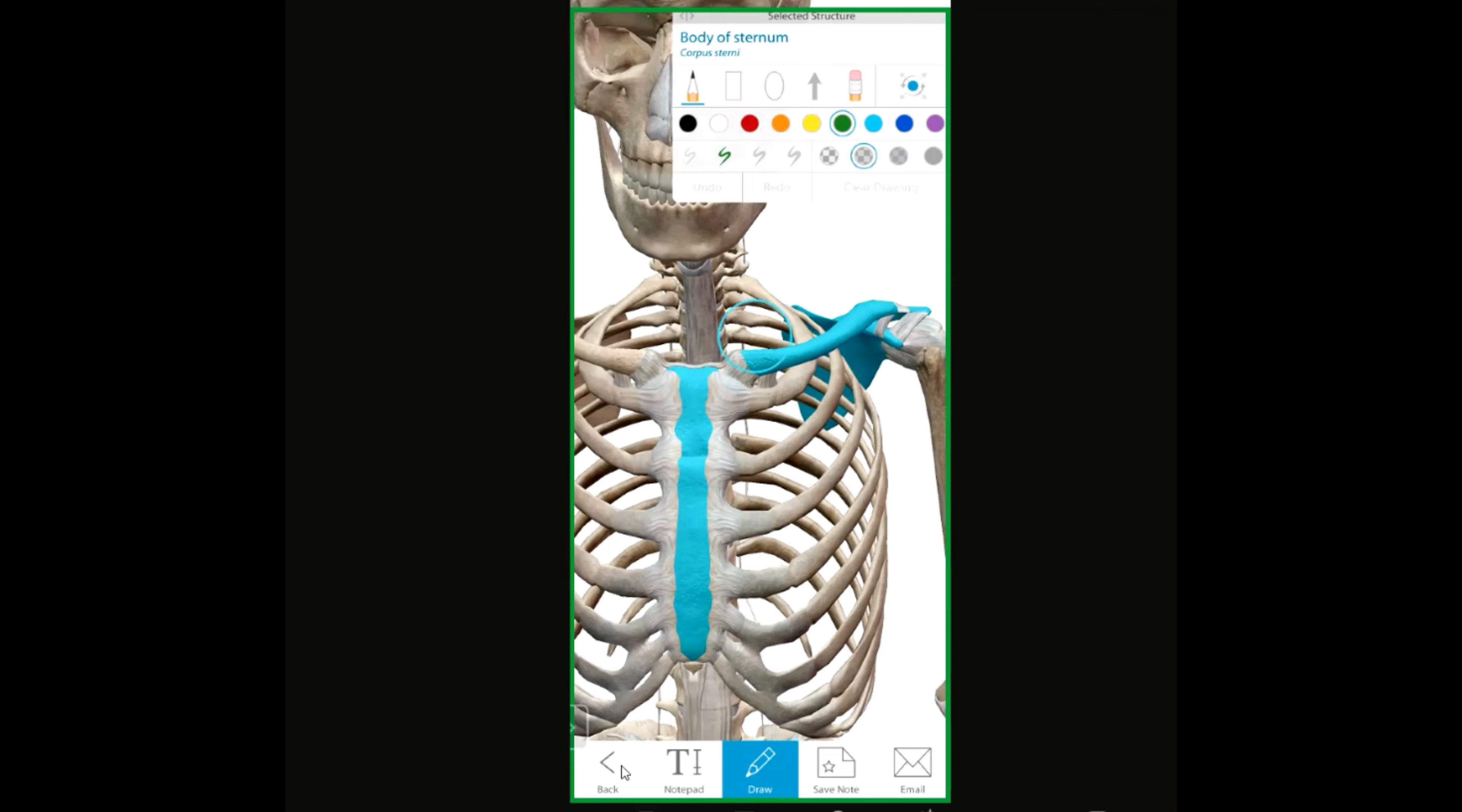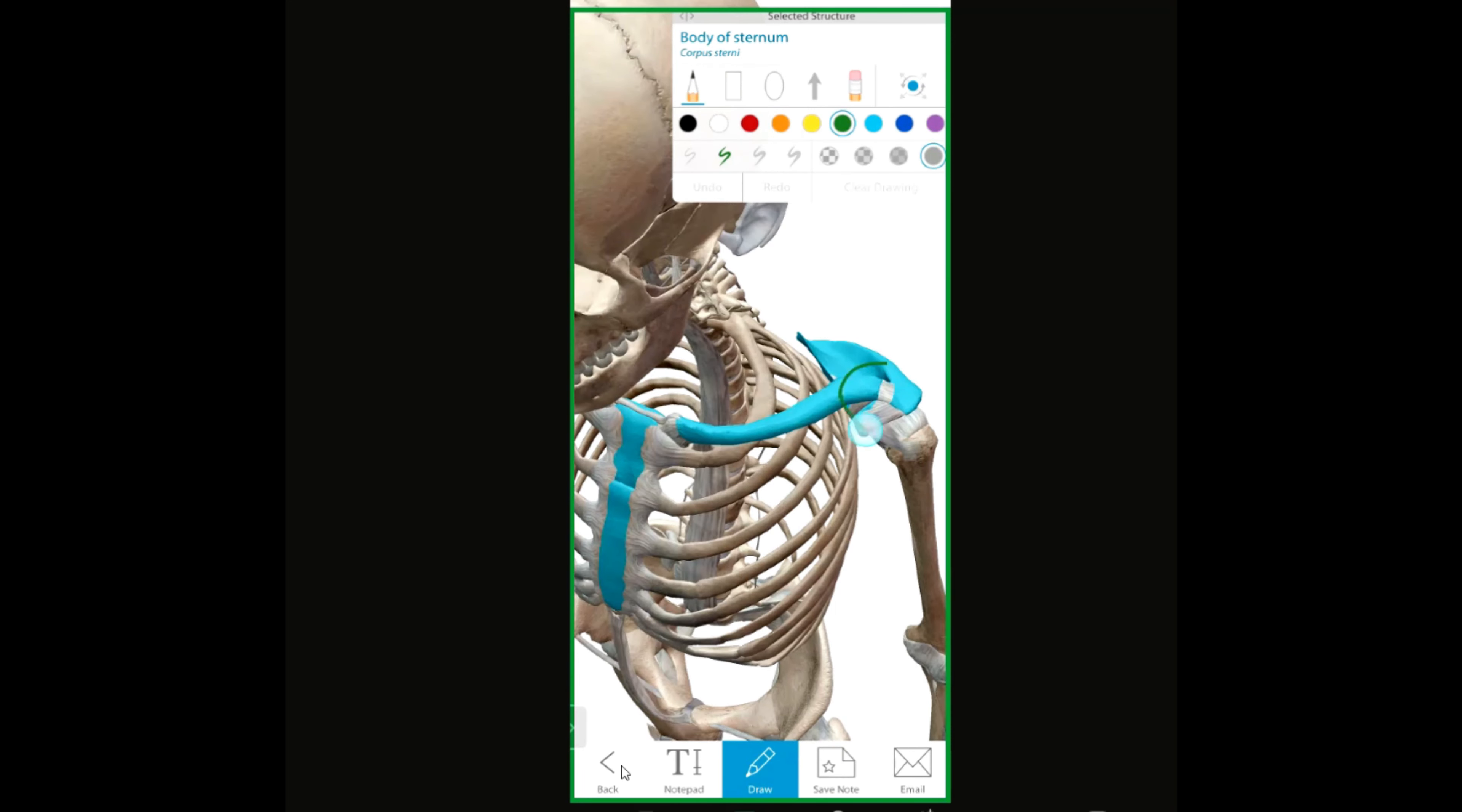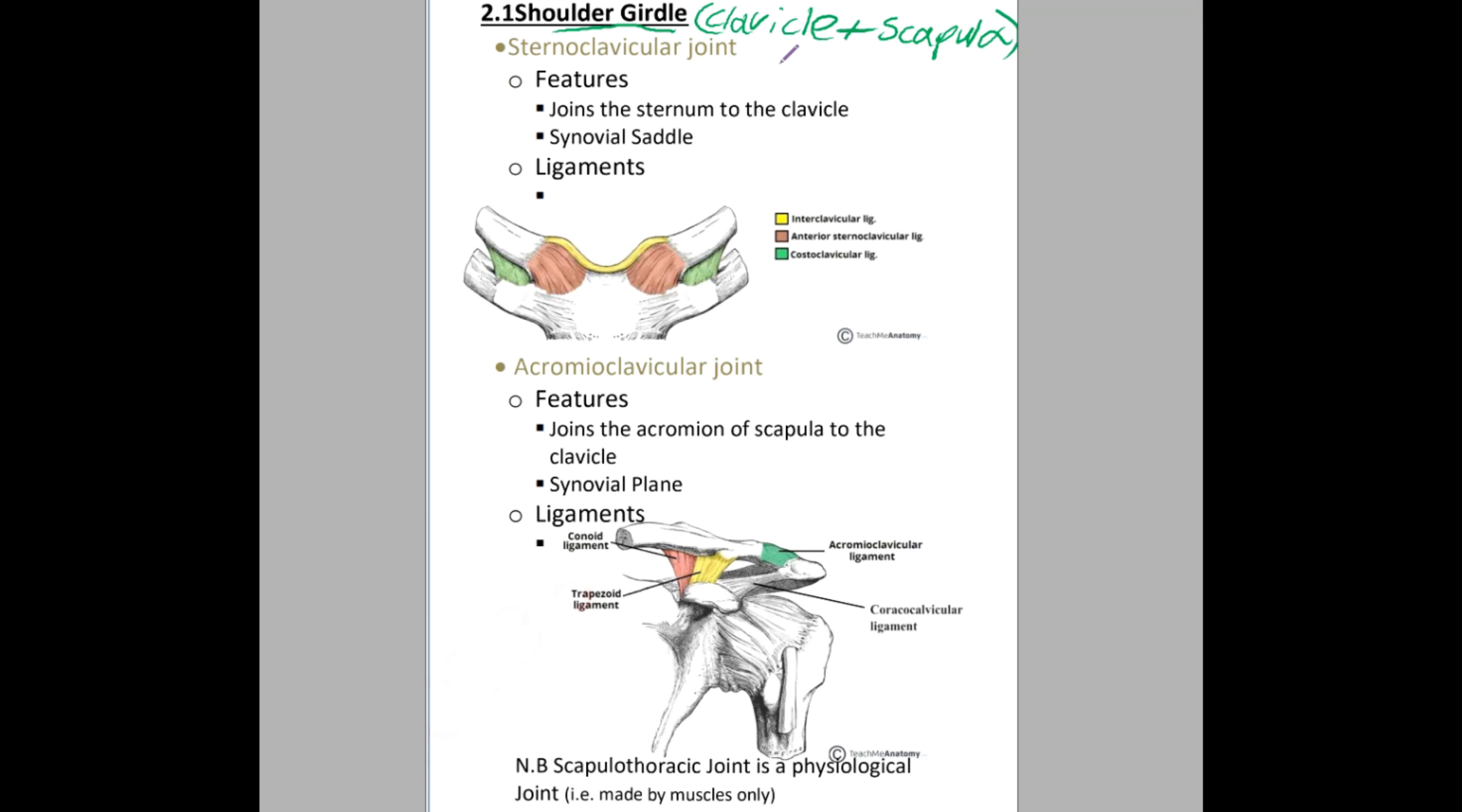On the meeting of the bones we have the sternoclavicular joint here between the sternum and the clavicle, also the acromioclavicular joint here between the acromion of the scapula and the clavicle. That's it, as simple as that, we have two bones in the shoulder girdle so we have two joints also. You need to write this sentence after me: each bone has an axis joint.